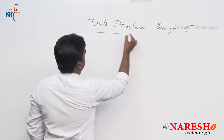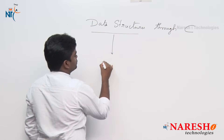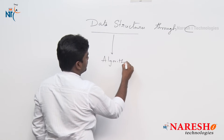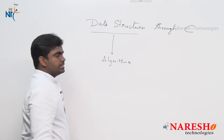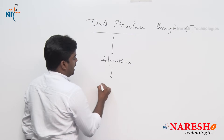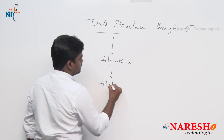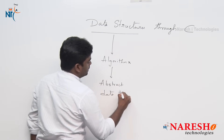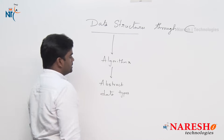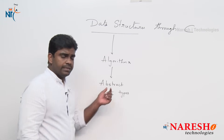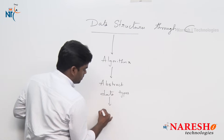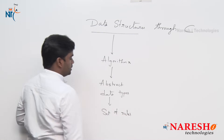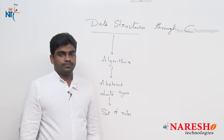To structure the data, n number of algorithms were proposed. All these algorithms are called Abstract Data Types, or ADTs. What is an abstract data type? Very simple: a set of rules. An algorithm is nothing but a set of rules.